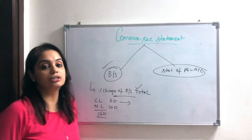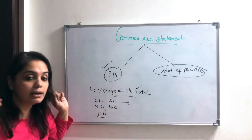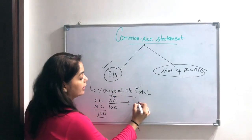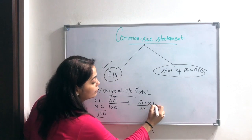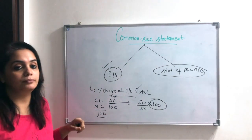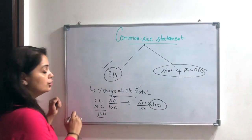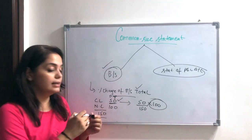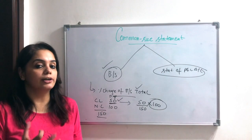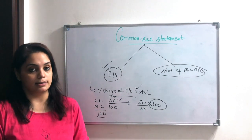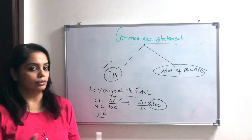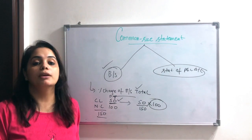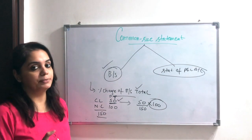So I will take a percentage from the previous year and current year in terms of the total of the balance sheet. My formula will be based on the total of the balance sheet. Current liability percentage is calculated in terms of total liabilities. Now I will show you a format of how we actually do this in the balance sheet.